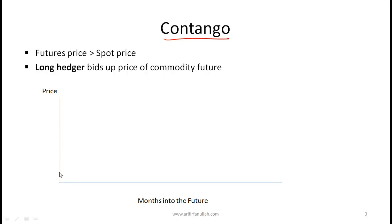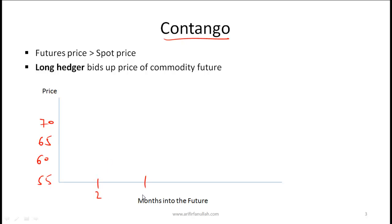On the y-axis we have the price of different futures contracts, and on the x-axis we have how many months into the future that contract expires. Let's say the y-axis values are 55, 60, 65, and 70, and the months into the future are 2, 4, 6, and 8.